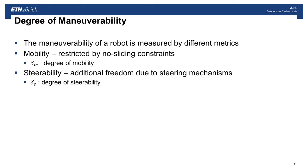Now, the maneuverability of a robot is measured by different metrics. And I'll go through those now. So the first one, we have mobility. So that measures how the robot is restricted by no sliding constraints. And secondly, you have steerability, which measures the additional degrees of freedom that are given to the robot by the steering mechanisms.